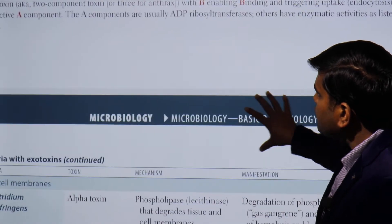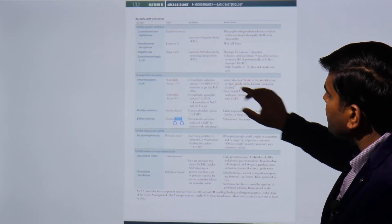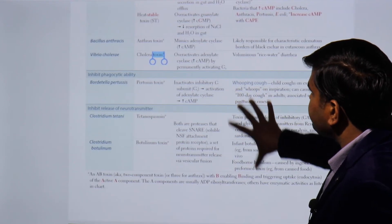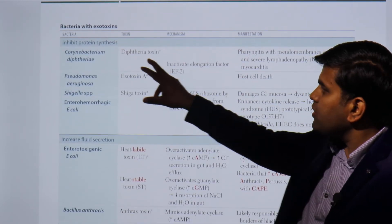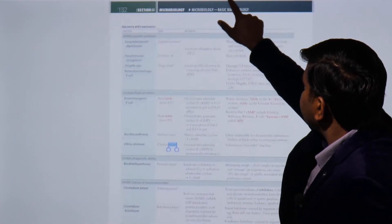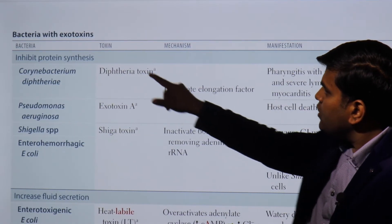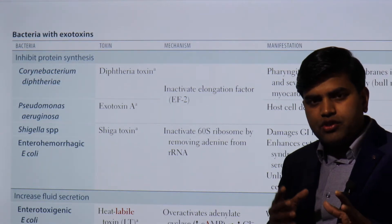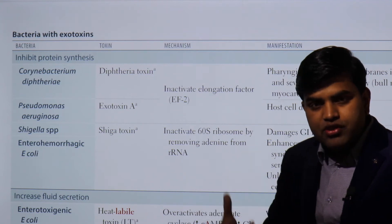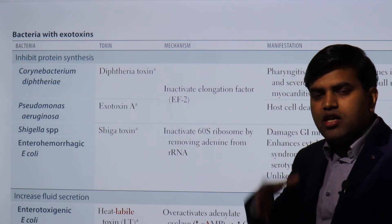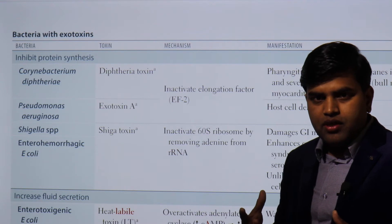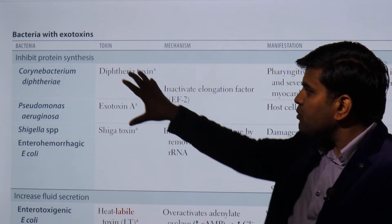To summarize the exotoxin categories: some inhibit protein synthesis, some increase fluid secretion, some inhibit release of neurotransmitters, some cause lysis of the cell membrane, and some act as superantigens causing shock. We will now go in detail through each category, starting with exotoxins that inhibit protein synthesis.